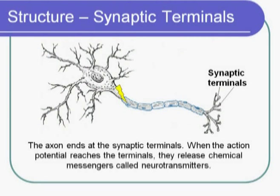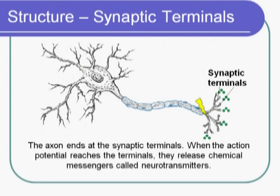The axon travels and ends in synaptic terminals, which can branch off and form functional connections to many cells. When the action potential reaches the end of the axon, the electrical signal needs to be converted into a chemical one. When the action potential reaches the synaptic terminals, they release chemical messengers called neurotransmitters.